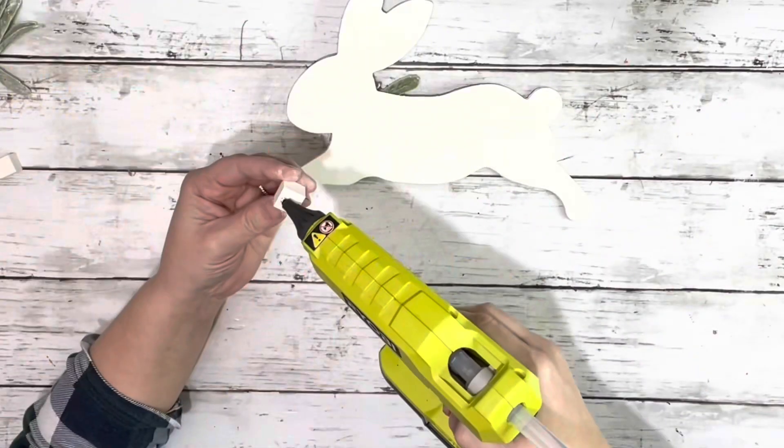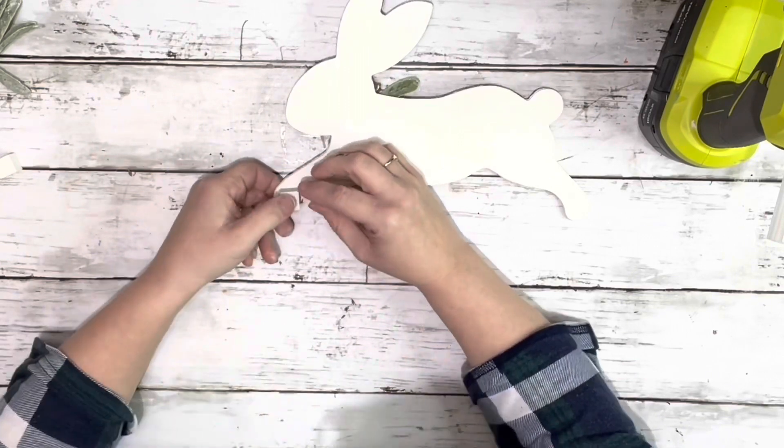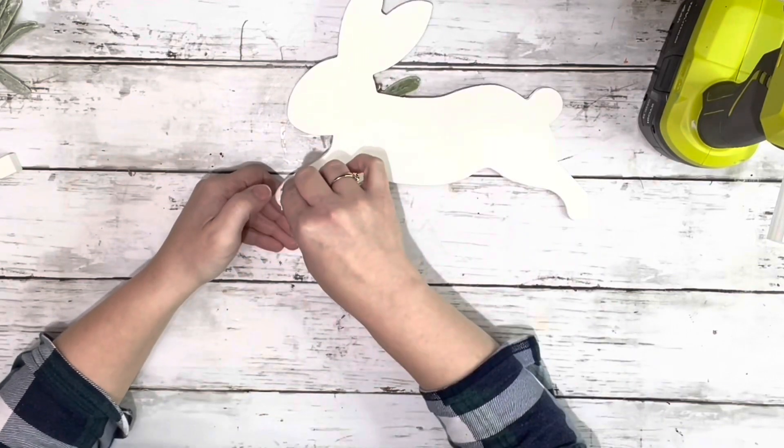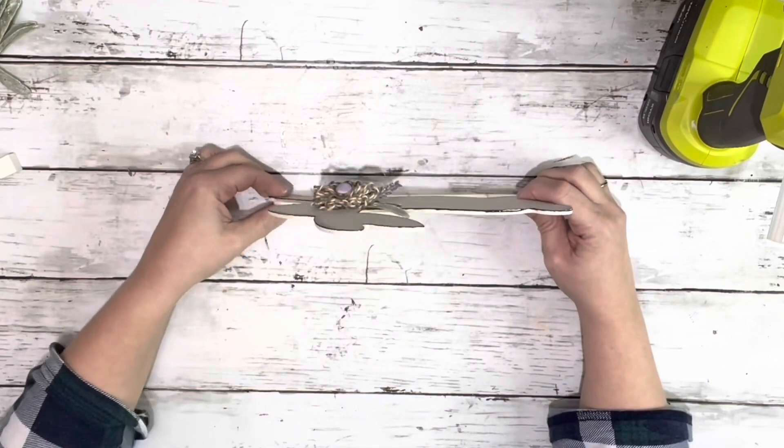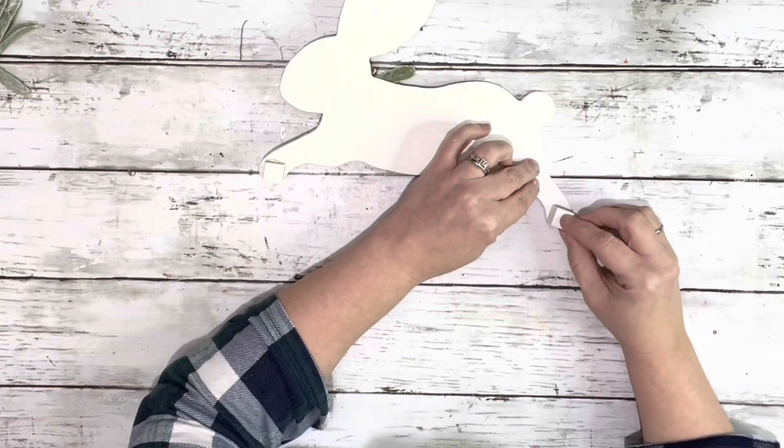Then I flipped the bunny over and took those wooden cubes I had painted and hot glued them to the bottom of the feet. Before they were completely dry, I stood up the bunny and made sure that they were level with the feet and that they would be flat against the surface.